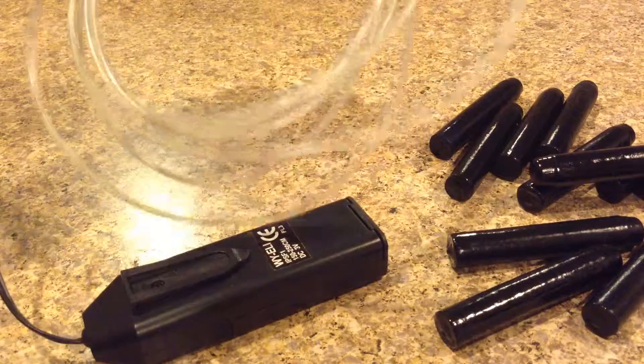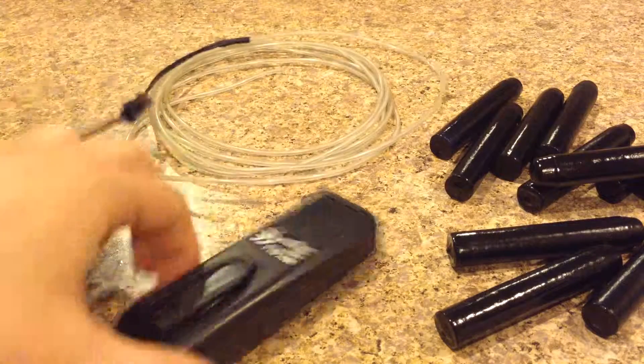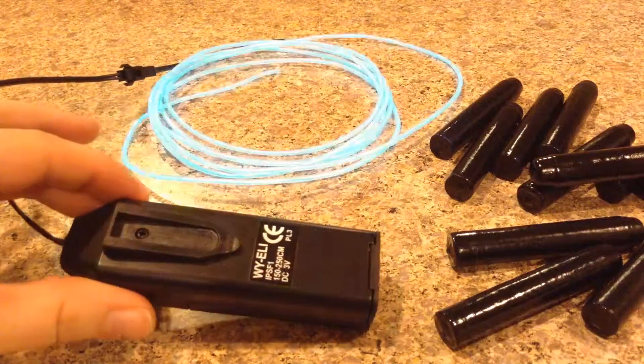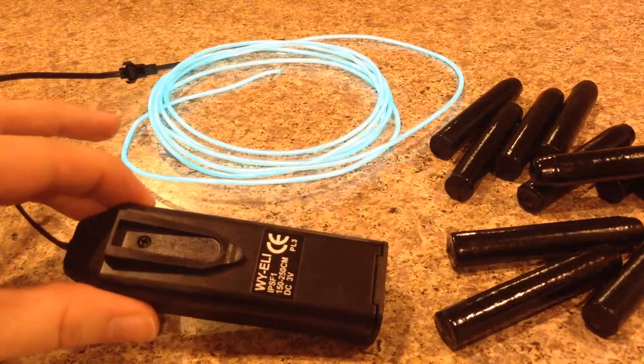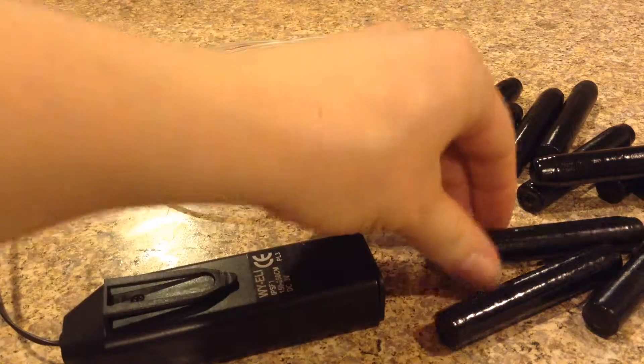So this is the actual EL wire, and I bought it, I think it was like actually 10 feet, and I bought the battery power separate, and that's just me showing you how it works, and I'll actually be wrapping it around each individual foam bullet.